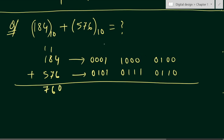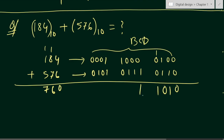Now performing BCD column addition from right to left: rightmost group 0100+0110: 0+0=0, 0+1=1, 1+1=0 carry 1, 1+0+0=1 → result 1010 (=10, invalid BCD). Middle group 1000+0111: adding gives 1111 (=15, invalid BCD). Leftmost group 0001+0101: adding gives 0110 (=6, valid BCD). So the two rightmost groups are invalid — we must add 6 to each of them.